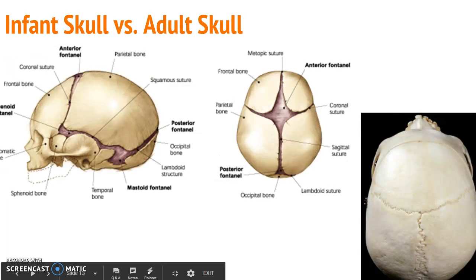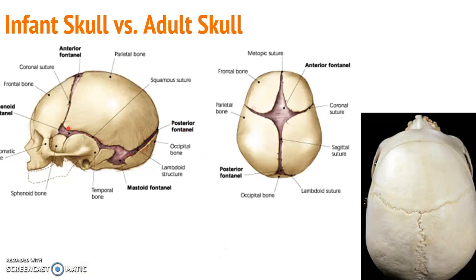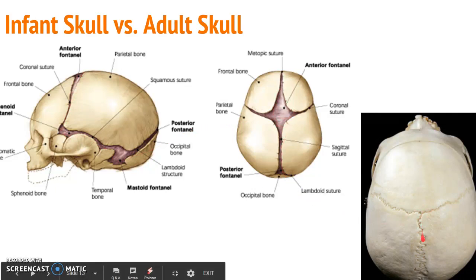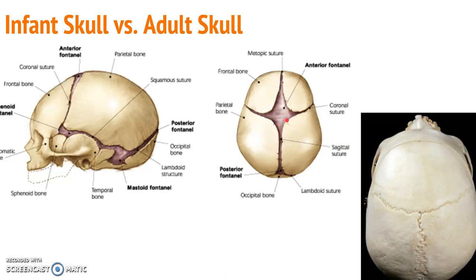On the skull, the sutures — or soft spots called fontanelles — are found on the skull of an infant, and as you age they become sutures and harden. These soft spots allow for easier childbirth through the canal by allowing the brain and skull to compress so it can make it out of the pelvic opening, making it much easier for the mother.